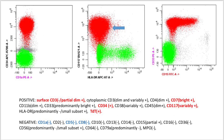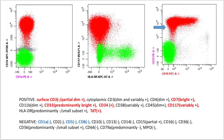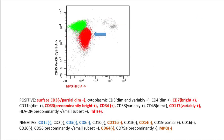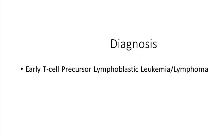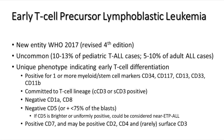We do have myeloid marker expression — CD117 positive and CD33 positive — but we have ruled out mixed phenotype acute leukemia. Overall, this is consistent with a diagnosis of early T-cell precursor acute lymphoblastic leukemia/lymphoma (ETP-ALL), a new entity included in the 2017 WHO classification. This is a relatively uncommon disease showing a unique phenotype of early T-cell differentiation, including positivity for one or more myeloid or stem cell markers such as CD34, CD117, CD13, CD33, CD11B, or CD65.